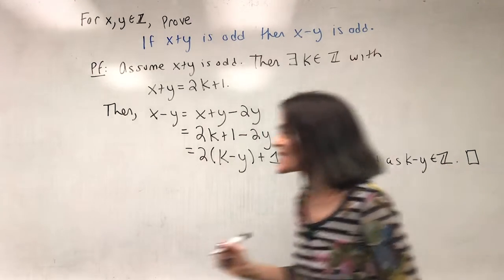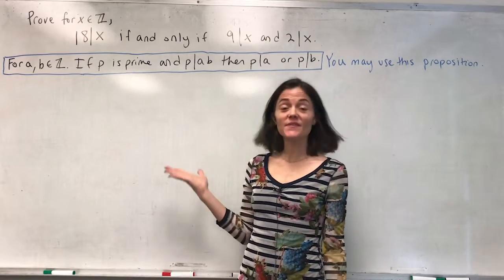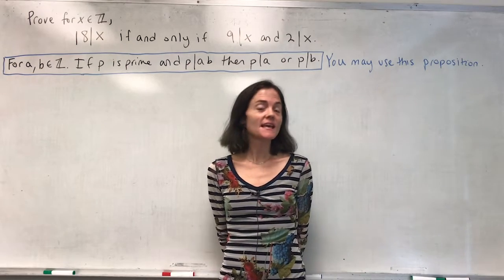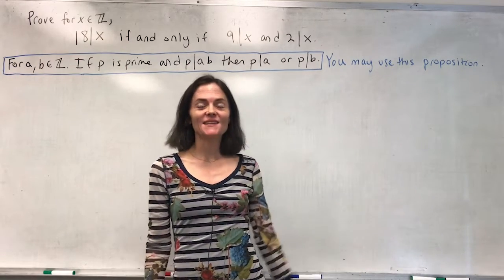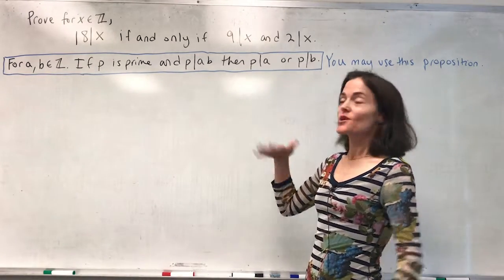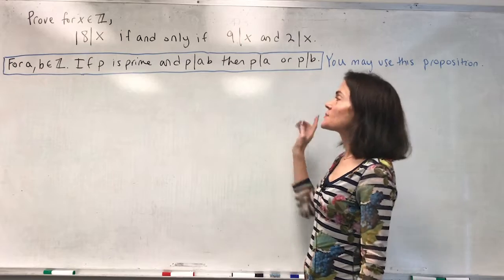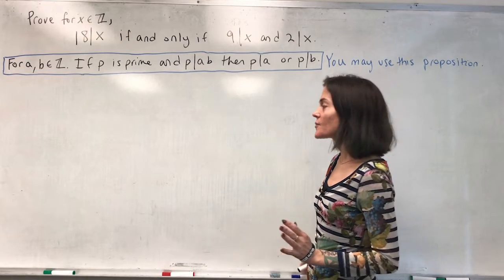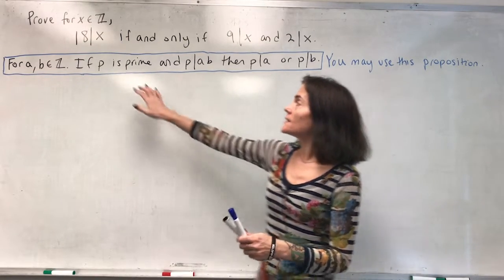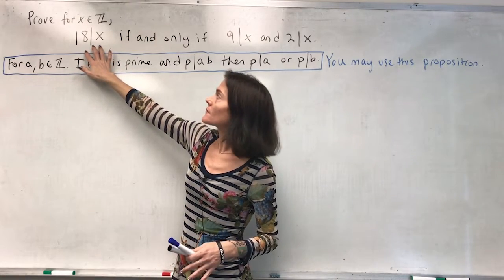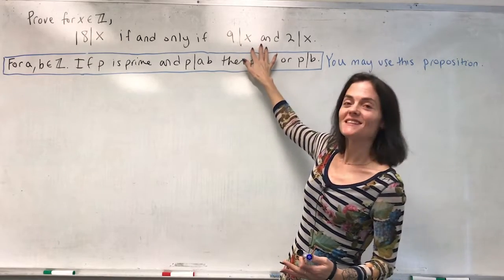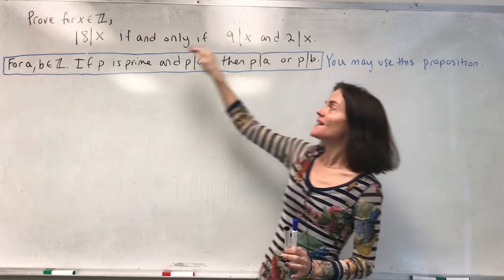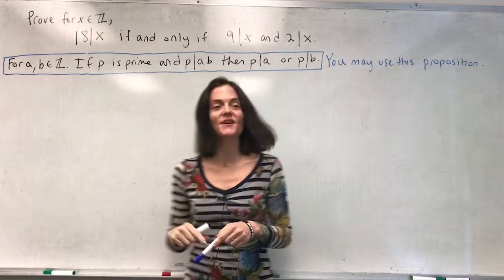Let's prove this if and only if statement, which says that for an integer x, 18 divides x if and only if both 9 and 2 divide x. You can use this proposition that is boxed in blue. We know that in an if and only if proof, there are two directions. We must show q implies r, and we must show r implies q. We must go in both directions.